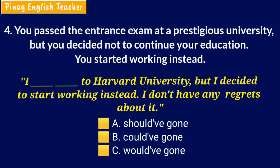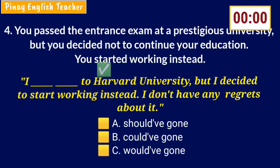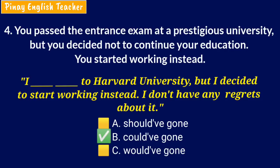Number four: The situation is, you passed the entrance exam at a prestigious university, but you decided not to continue your education and started working instead. Now you say: I blank to Harvard University, but I decided to start working instead. I don't have any regrets about it. A. Should've gone. B. Could've gone. C. Would've gone. The answer is B — could've gone. It's about an ability and possibility in the past.